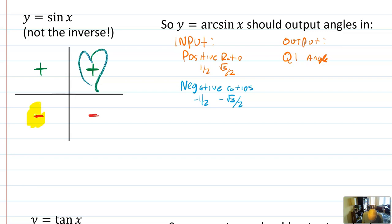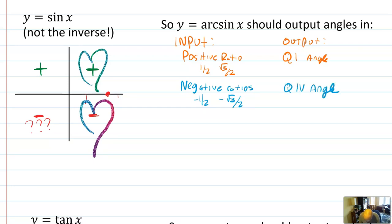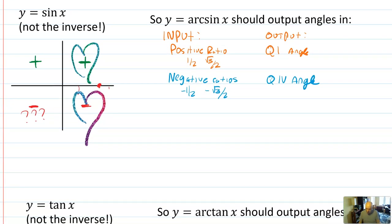For negative ratio inputs, I have to select from quadrants three and four. Quadrant three is not very logical — why pick it when quadrant four is right next to the zero line? You can draw lovely triangles in quadrant four if you think about negative angles. So we're going to select quadrant four as our chosen output quadrant. If the input is a negative ratio, the output will be a quadrant four angle. It's like when we agreed that square root of 25 means positive five — an agreement to avoid ambiguity and maintain a function.